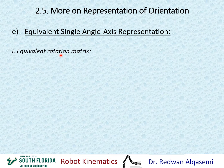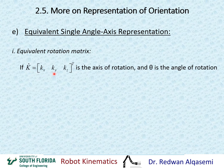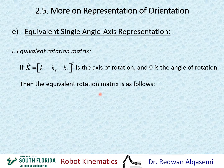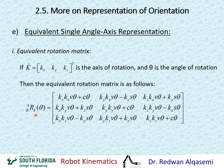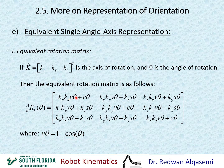To find the equivalent rotation matrix when using this method — the equivalent single angle-axis representation — let's assume K equals [KX, KY, KZ] transpose as the axis, and theta as the angle of rotation. The equivalent rotation matrix R(K, theta) has nine elements, all dependent on KX, KY, KZ, and theta. Note that V(theta) here is defined as one minus cosine theta.